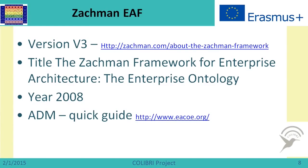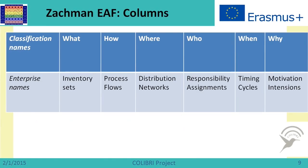Let us consider those four Enterprise Architecture frameworks more deeply. The first one is the ZACHMAN Enterprise Architecture Framework. We are looking at version 3, released in 2008. This release has an architecture development method called the Quick Guide, accessible via the provided link. Artifacts are classified by well-known questions: what, how, where, who, when, and why.